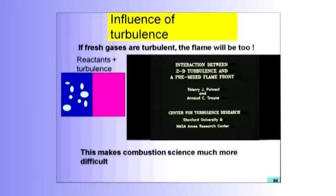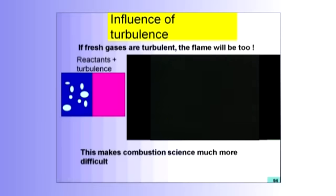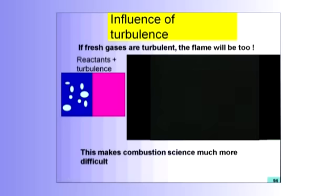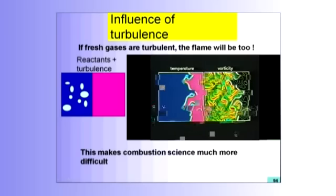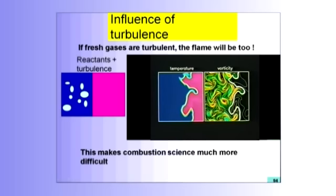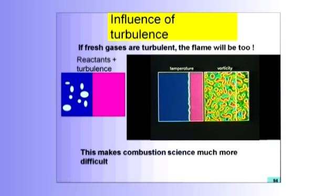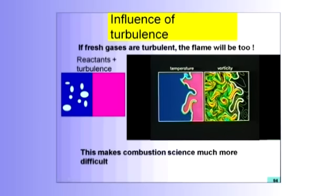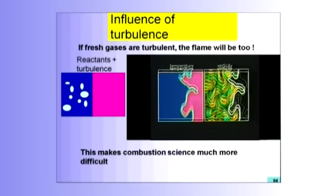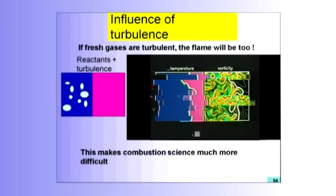This is a very old movie, probably 30 years — 22 years now. We did that a long time ago and our problem was the following. We have a flame here, fresh gases, burnt gases, and we're just sending turbulence into this flame. The first thing which happens when you send turbulence — this is vorticity here — into a flame, you can see it here, that the flame gets wrinkled.